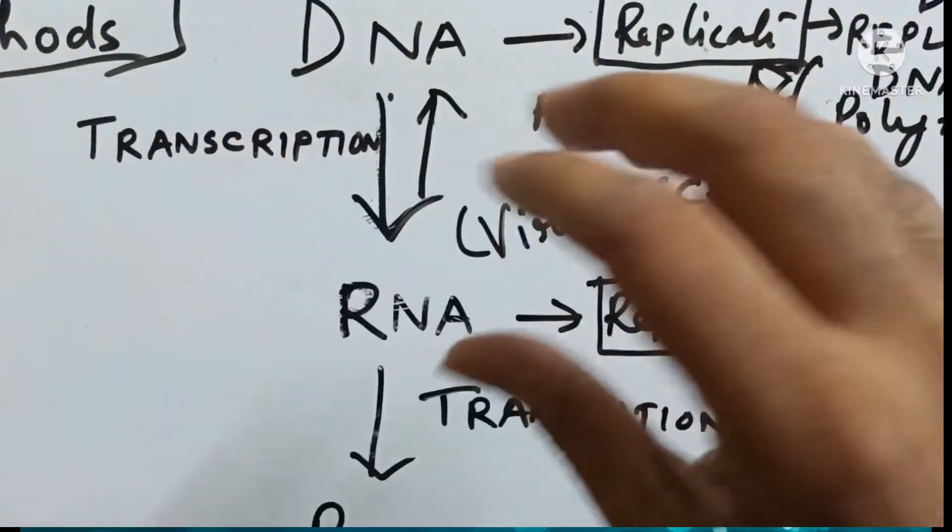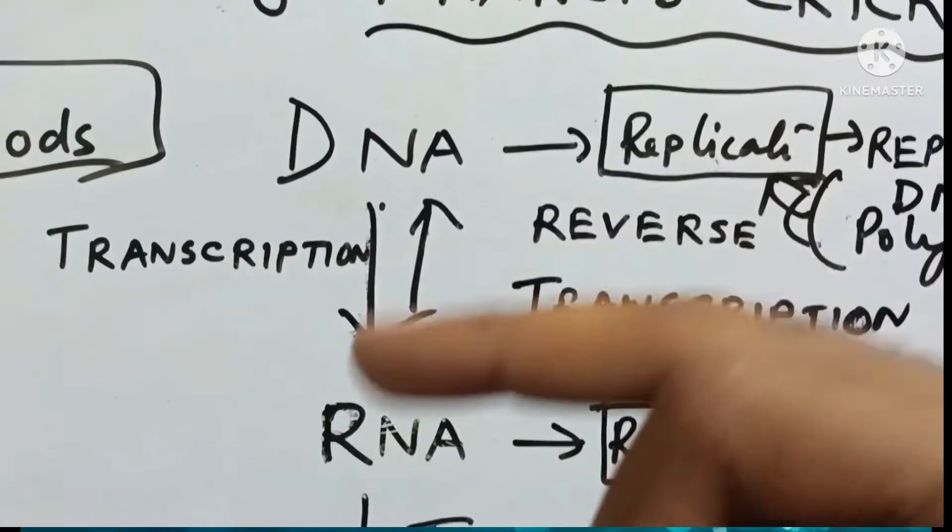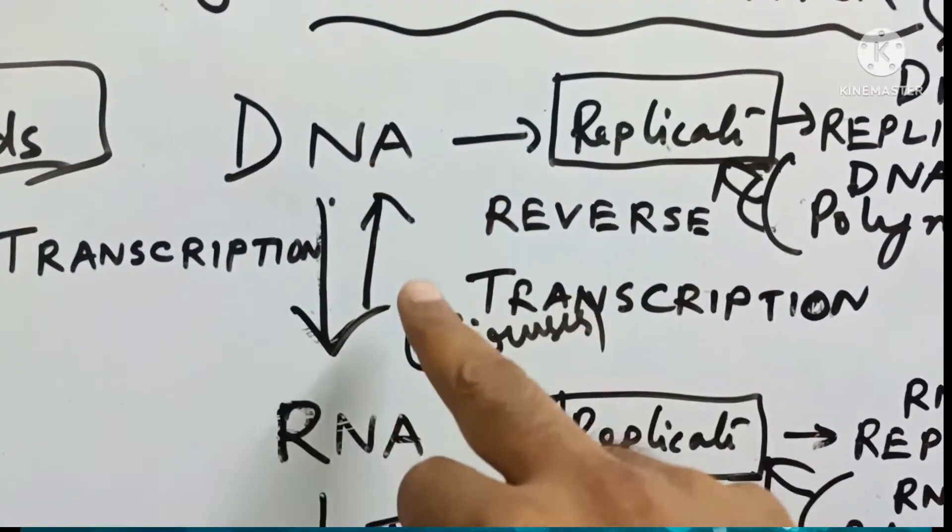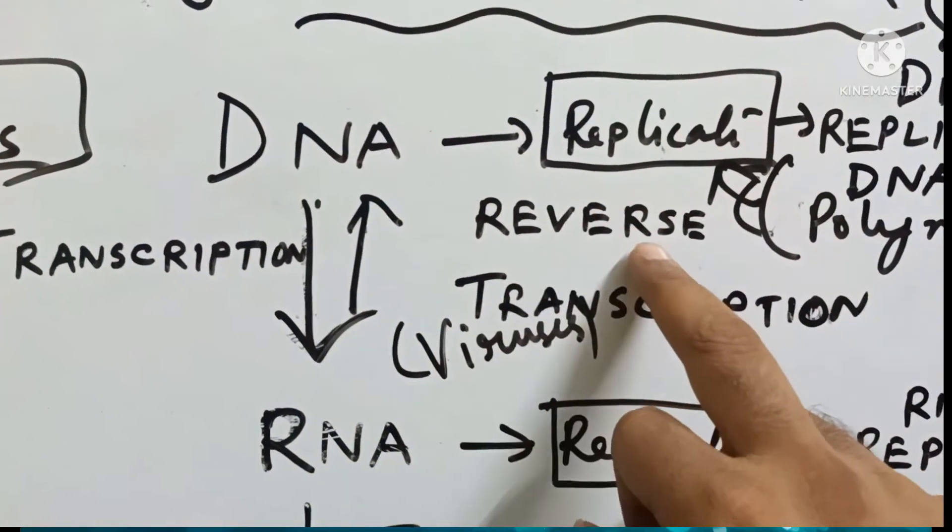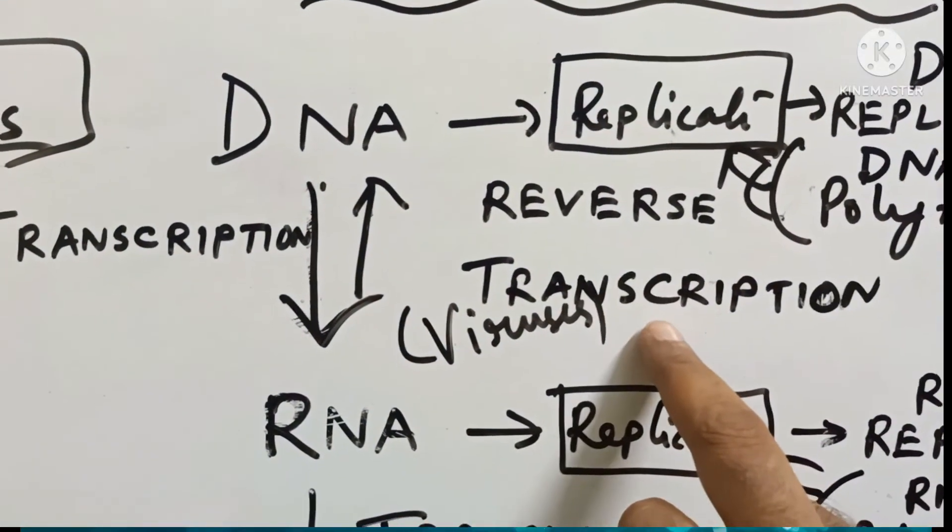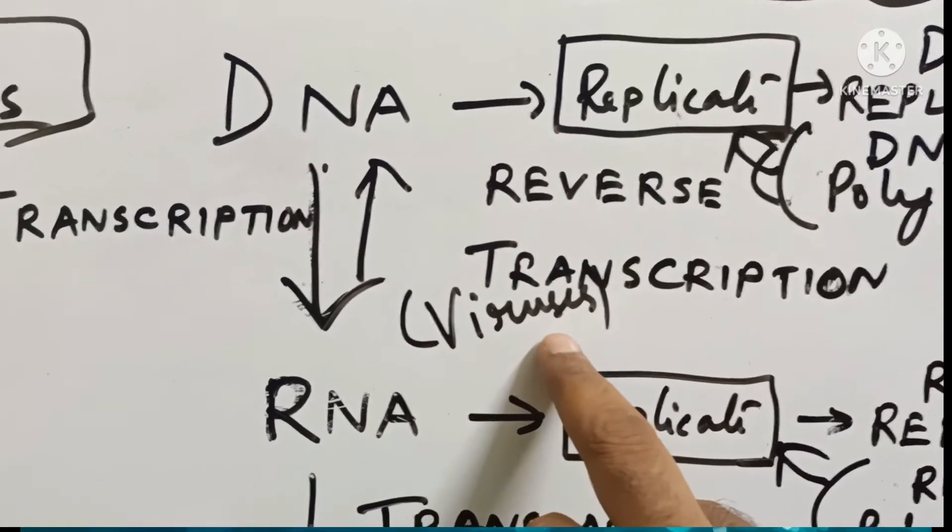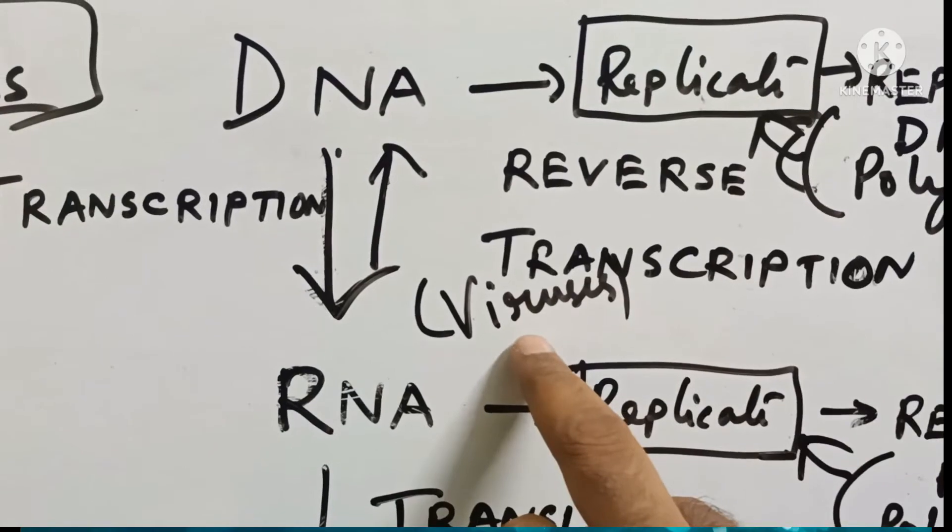There is a special case when RNA gets converted into DNA. This process is known as reverse transcription and it happens in case of viruses only. It is a special case.